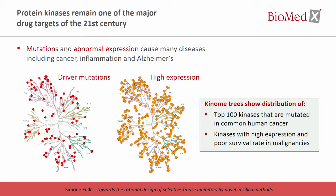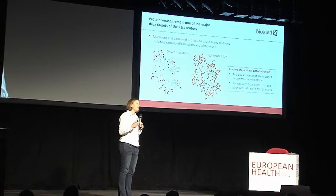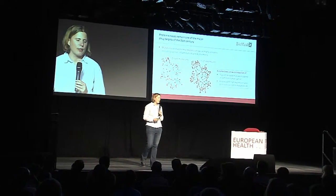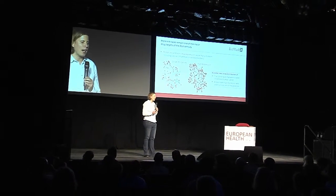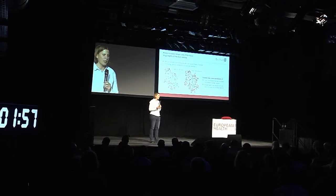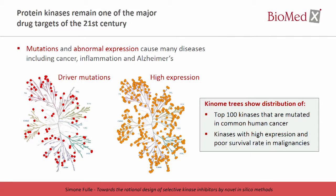What is plotted on the left tree is a distribution of kinases which are very often mutated and are driver mutations in common human cancer. What you can see is that it's evenly distributed over the kinome tree. The picture gets even more crowded if we look at the right tree, where kinases are plotted which have a correlated high expression and a poor survival rate in the clinics in at least one cancer type. So pretty much each kinase could be an interesting drug target worth exploiting.